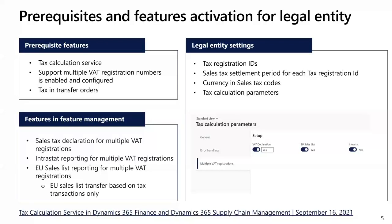Thank you, Adam. We'll start with information about how to activate this new functionality. First, you need to make sure that you've enabled in Feature Management the feature 'Support multiple VAT registration numbers' and also that the tax calculation service is enabled. Also, if you transfer goods between warehouses in different countries, you should enable the 'Tax on transfer order' feature.